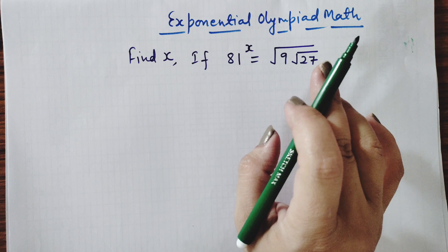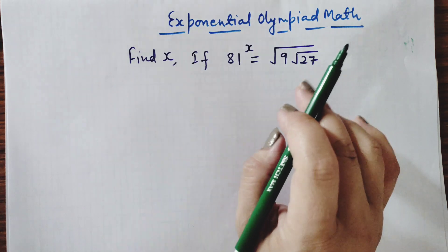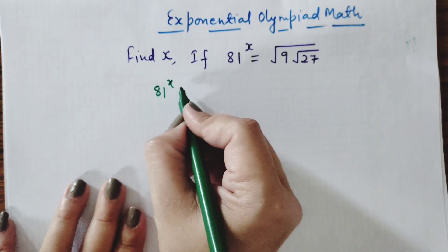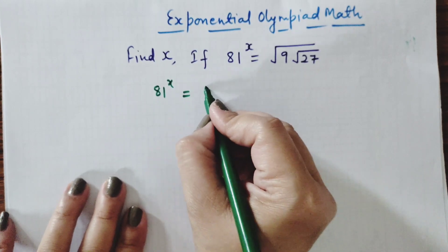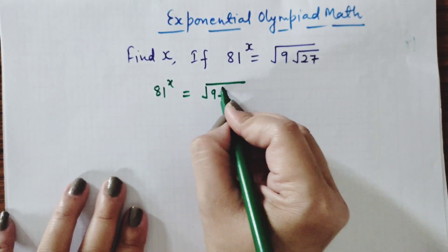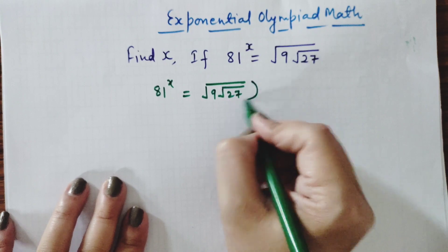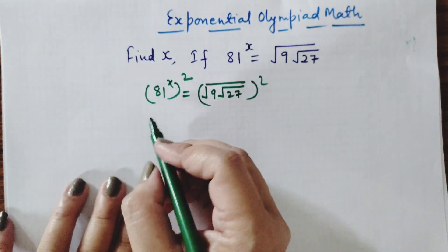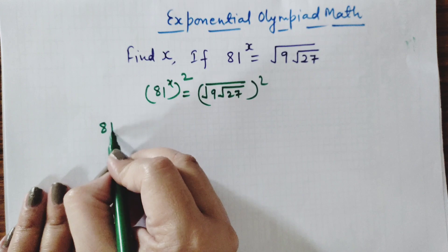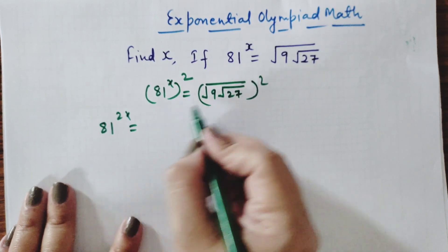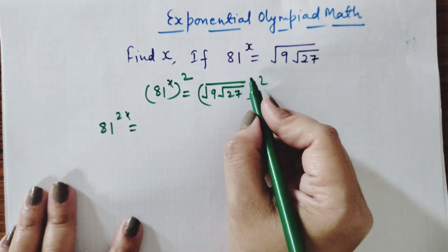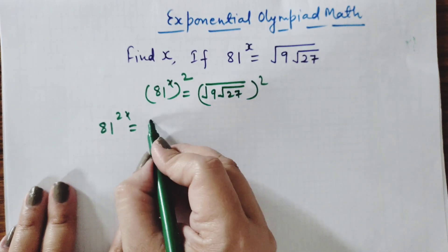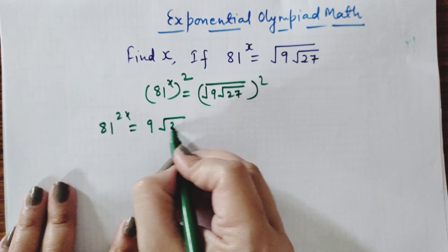First of all, we will do squaring on both sides. So for 81^x times the root of 9 under root of 27, squaring both sides gives us 81 power 2x is equal to — the outer root is removed by the square — so inside we have 9 under root of 27.